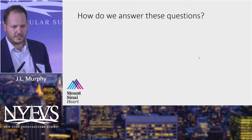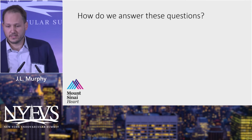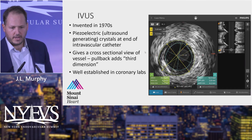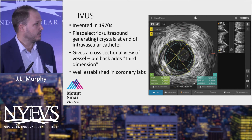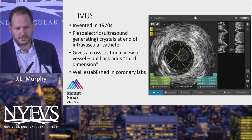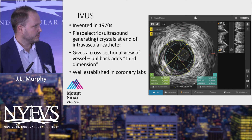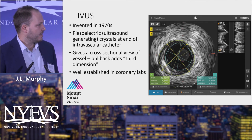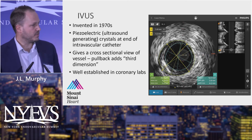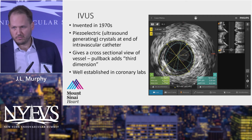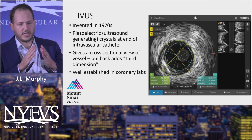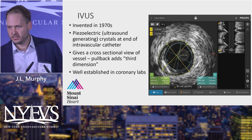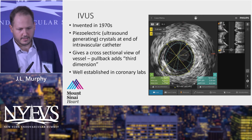We were in the lab discussing these questions, and one answer that came up was: we can use IVUS to answer a lot of them. IVUS, as you all know, is a great technology. It was invented in the 1970s and consists basically of ultrasound-producing crystals placed at the end of an intravascular catheter. It gives a cross-sectional view of the artery — as opposed to angiography where you're just looking at it end-on — and when you incorporate a pullback you generate that third dimension, so you actually get information about all three dimensions of the artery.